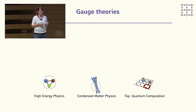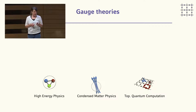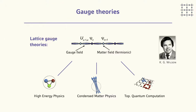Gauge theories are usually defined in the continuum, but there is a very useful technique: lattice gauge theories, where they are regularized on a grid. Matter fields live on the vertices of the lattice and interact with gauge fields described by link operators between neighboring sites. This formalism was originally developed for quantum chromodynamics and has been extremely successful. However, it remains extremely challenging to simulate gauge theory dynamics, particularly in non-perturbative regimes.